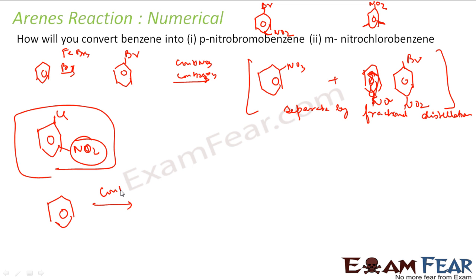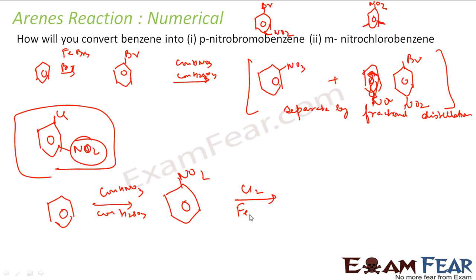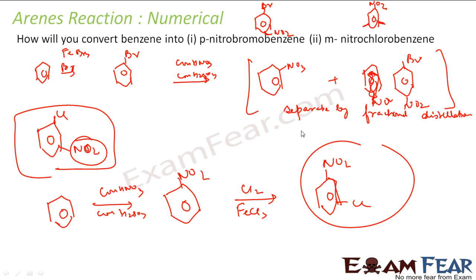First I do nitration using concentrated nitric acid and concentrated sulfuric acid. Once nitration is done, I add chlorine using FeCl3 or AlCl3 as catalyst. In this case my chlorine goes to the meta position only, giving me the desired compound. Since I get only one compound, I don't need fractional distillation.